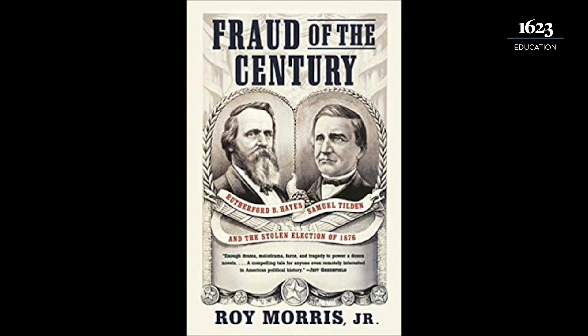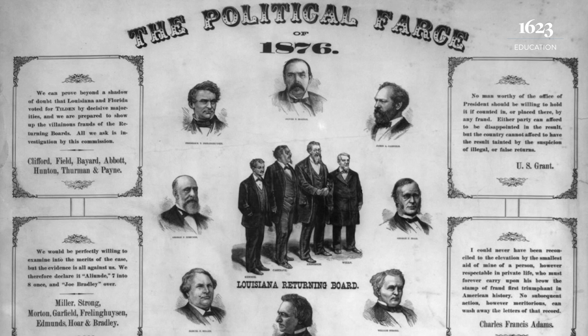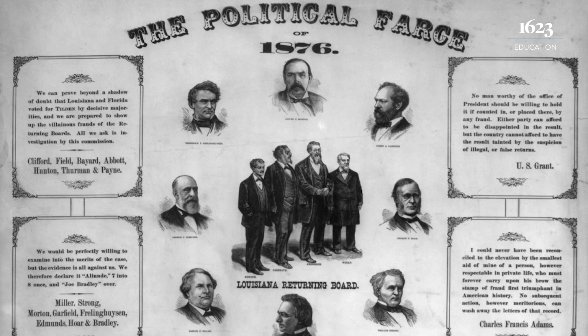Eventually, they decided to give the election to Hayes. They decided that those disputed electoral votes in those states should go to Hayes. Of course, the Democrats were outraged by this. Their candidate, they felt, was being taken out of an election he had won by the popular vote and came only one vote short of the electoral vote. The Southern Democrats were actually talking about seceding again — was this another civil war? We had just finished in 1865, and could we be thrown back into civil war again?